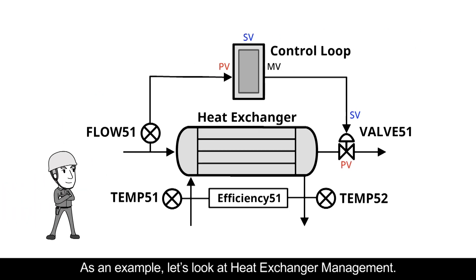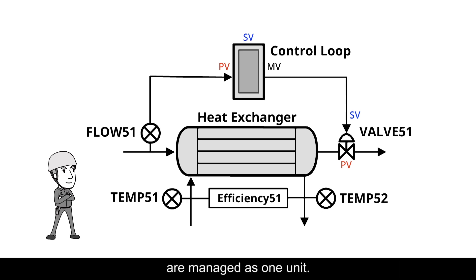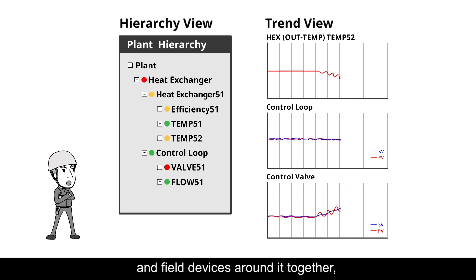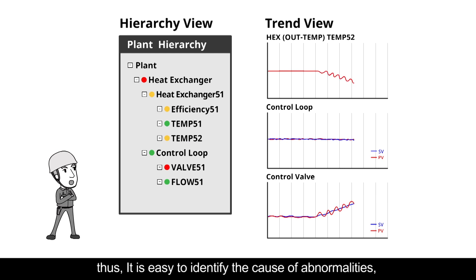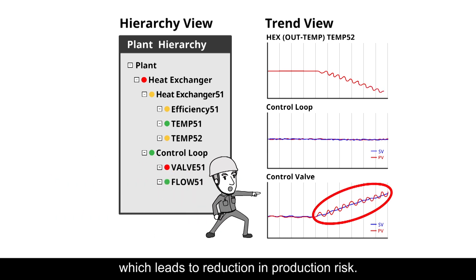As an example, let's look at heat exchanger management. The heat exchanger, its supporting control loop, and related field devices are managed as one unit. ISAE has the capability to diagnose production equipment and field devices around it together. Thus, it is easy to identify the cause of abnormalities, which leads to reduction in production risk.